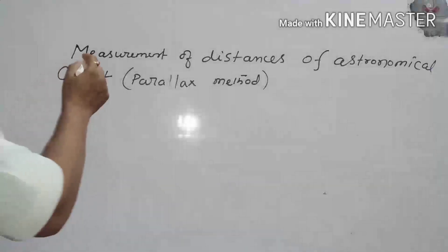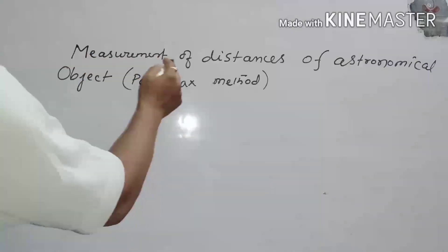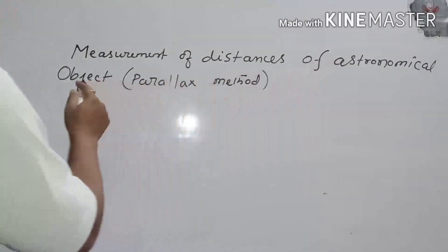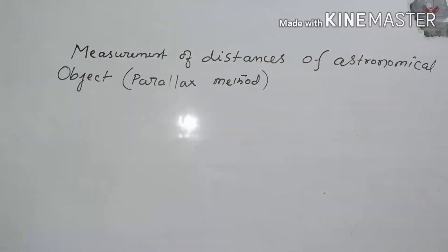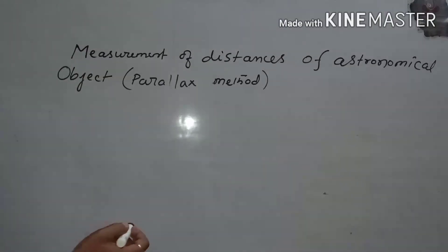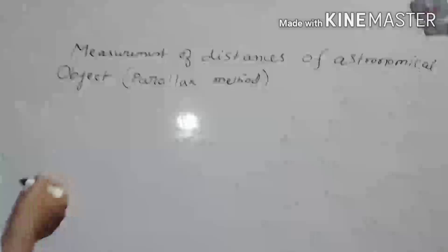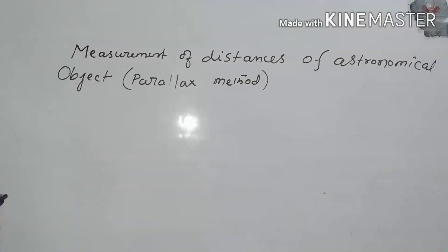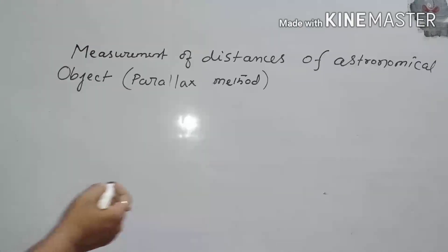Today, we are going to discuss measurement of distances of astronomical objects by the parallax method. This method is used to measure the distance of a star which is less than 100 light years.